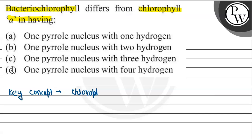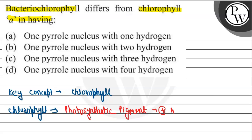Chlorophyll - what is chlorophyll? Chlorophyll is a photosynthetic pigment. It's a photosynthetic pigment that is present in algae and also present in angiosperms.